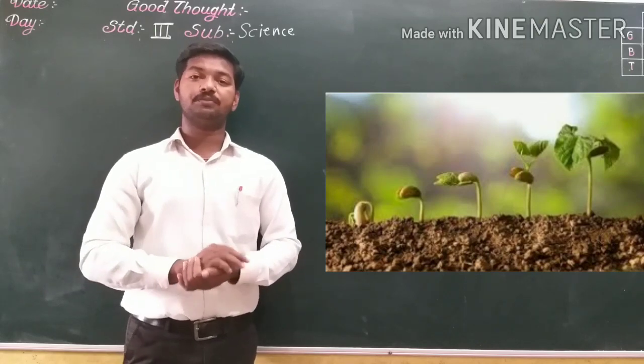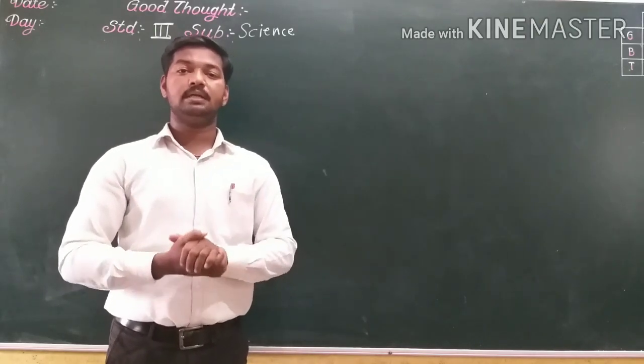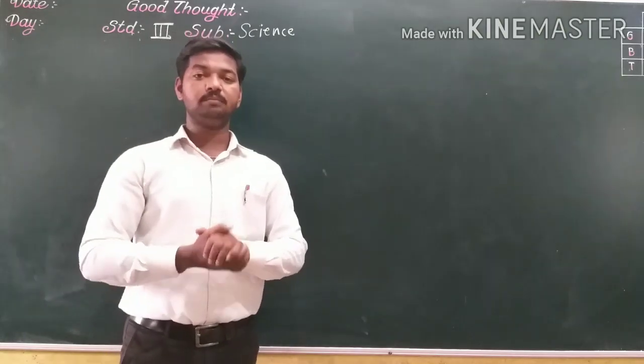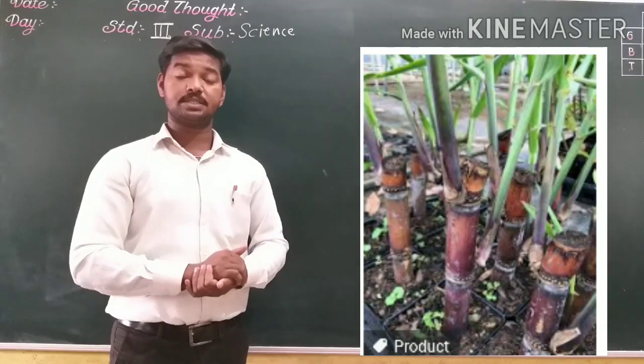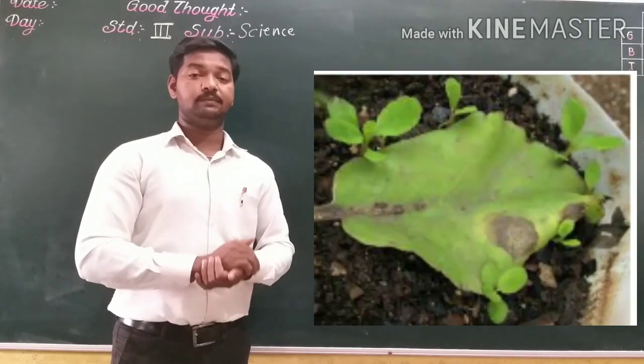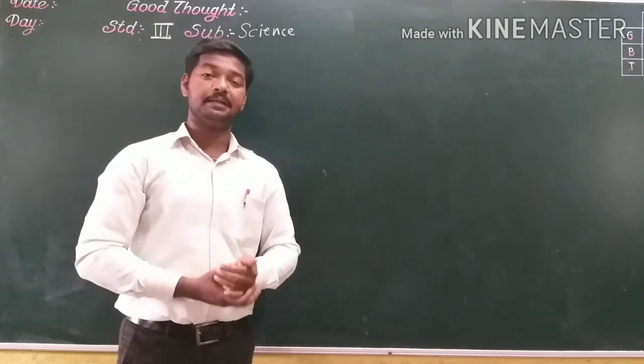Plants produce seeds. New plants grow from seeds. Some plants produce new plants from parts of plants like stems, roots, and leaves. So all living things reproduce.